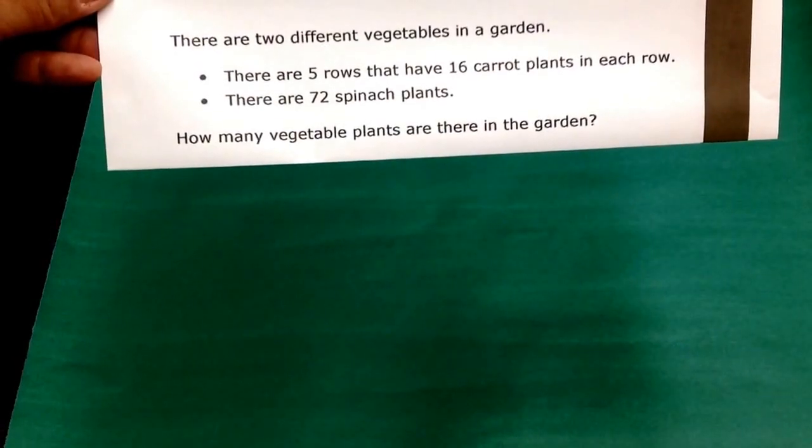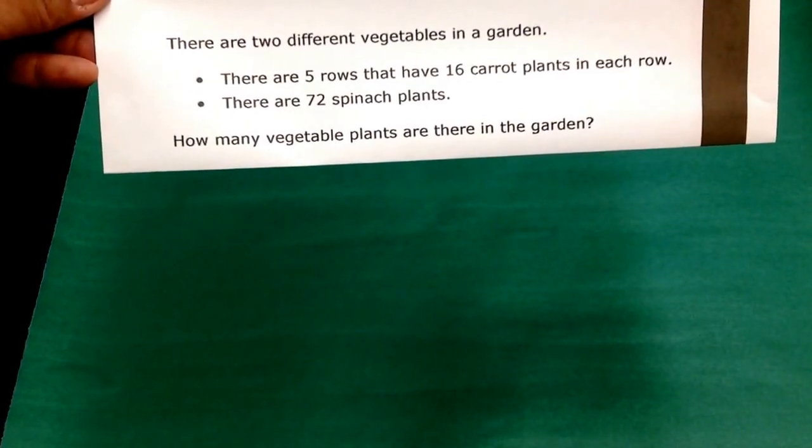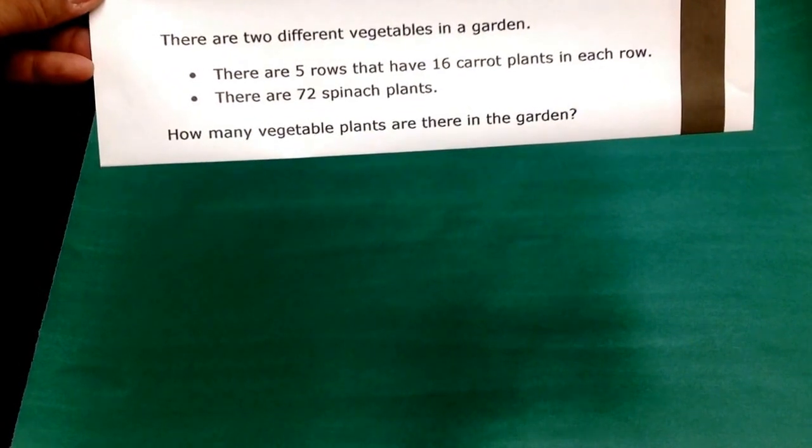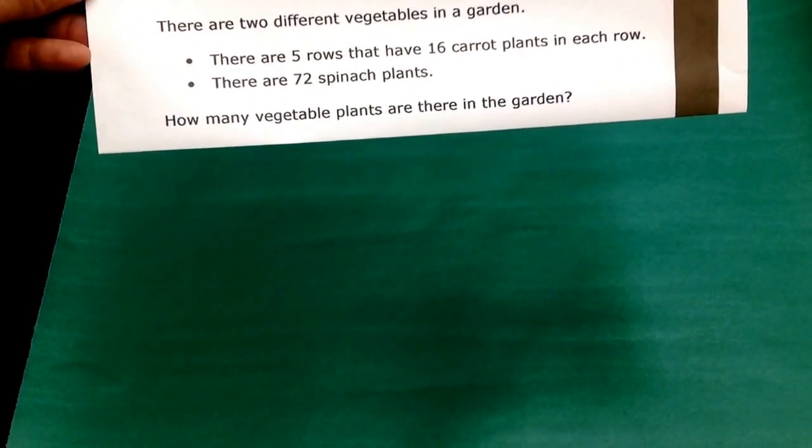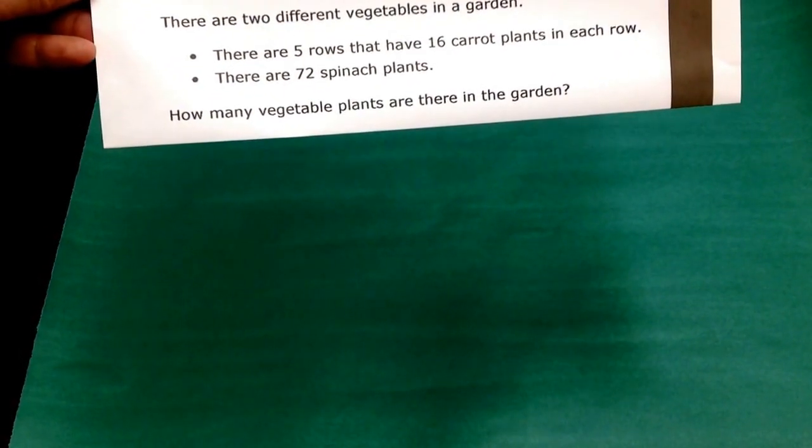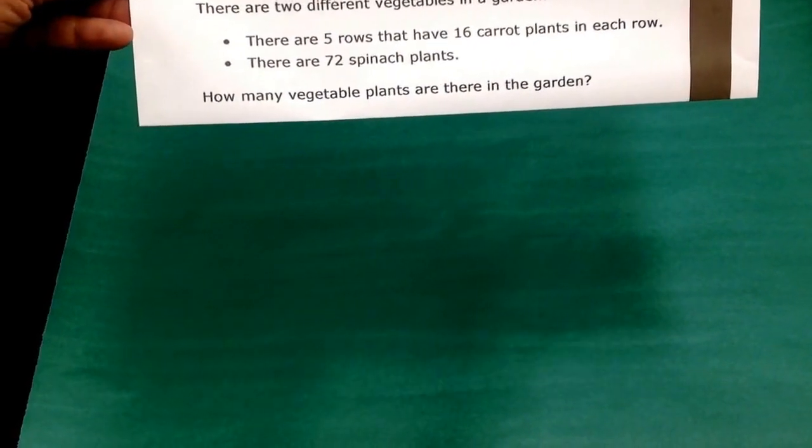With this problem, we're going to have to figure out how many vegetables all together, so the carrot plants and the spinach plants must be added together to find out the number of vegetable plants in the garden. We're told that there are five rows of 16 carrot plants.